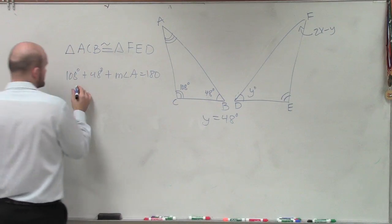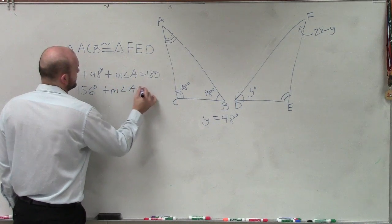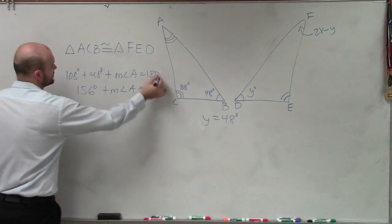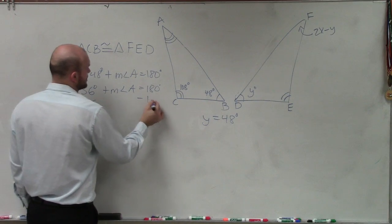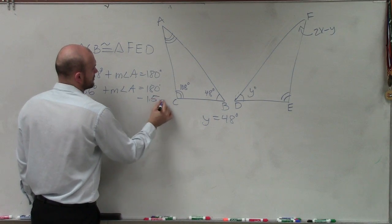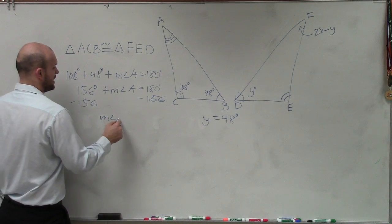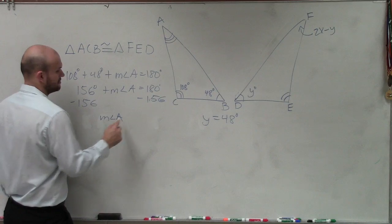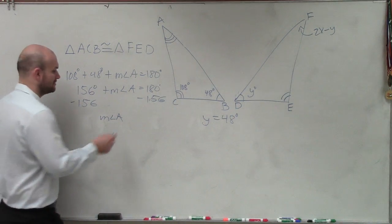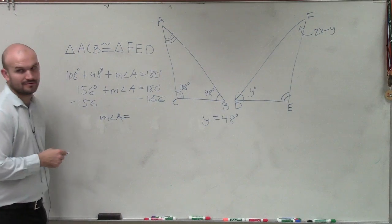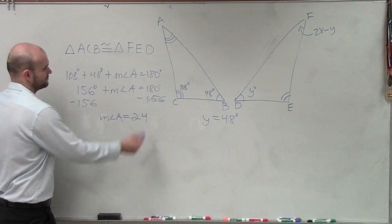So therefore, now I just combine these two terms, which is going to be 156 degrees plus the measure of angle A equals 180 degrees. Now I subtract 156. So the measure of angle A is now going to equal 24 degrees.